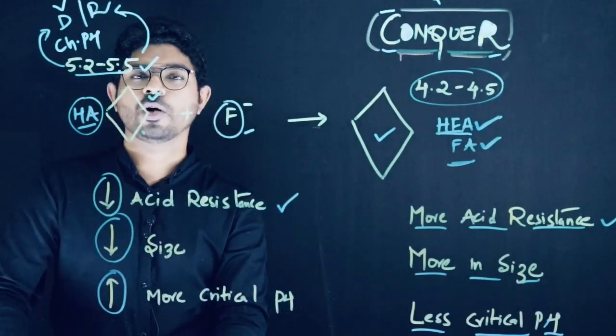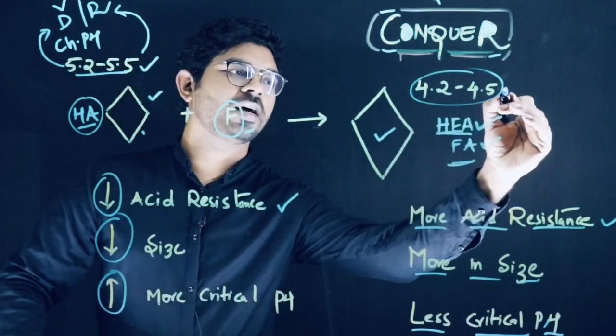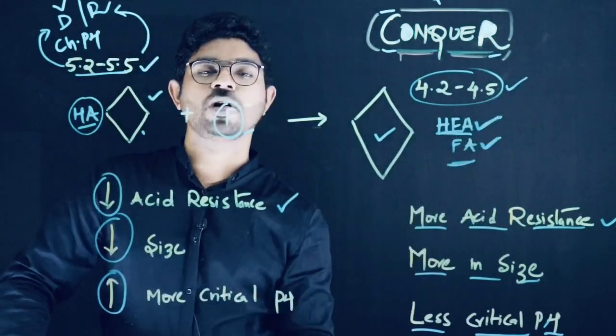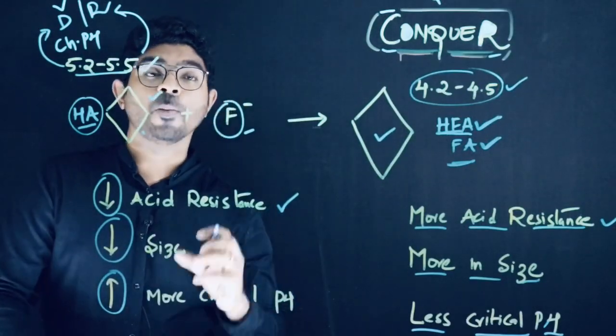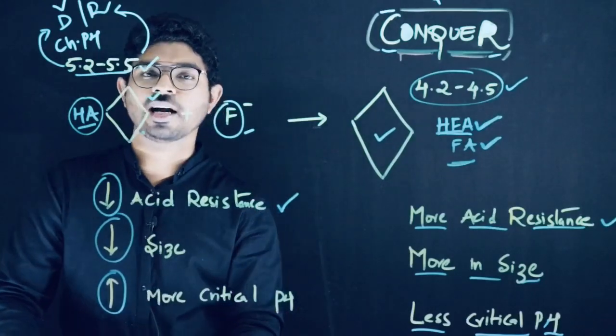When you compare the critical pH of normal teeth, it is 5.2 to 5.5, whereas fluorapatite or fluorohydroxyapatite is 4.2 to 4.5, which clearly means that more acid is required for dissolution of teeth when it reacts with fluoride.